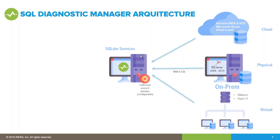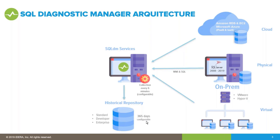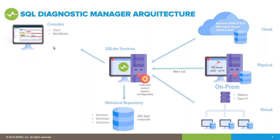With WMI we gather operating system information — CPU, memory, and disk. With the SQL account we gather database and instance information. All that data is kept in a repository SQL database — Standard, Developer, or Enterprise edition; it cannot be Express, because we require a SQL Agent job to clean data, which is run every 365 days.